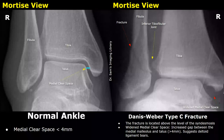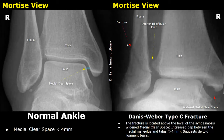Weber type C fractures occur above the level of the tibio-fibular syndesmosis. This fracture is above this joint, and along with the fracture there is a widened medial clear space. In the normal image, this is the medial clear space — normally this space should be less than four millimeters. However, in this case there is an increased gap between the medial malleolus and the talus of more than four millimeters, which suggests deltoid ligament tears.